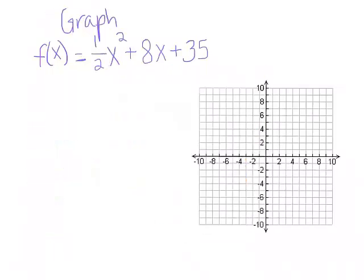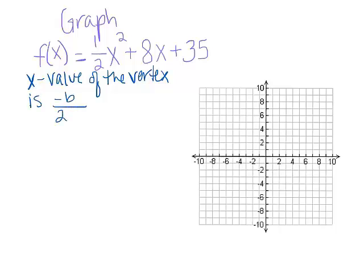But what about this function? Here we have a standard form function where our a value is 1 half. If I try the same method, I'd have to complete the square and factor out a 1 half, which nobody wants to do. Let's not do that. Let's recall a key fact: the x value of the vertex of a quadratic function written in standard form is negative b over 2a, which is also the axis of symmetry, since that axis of symmetry has to pass through the vertex.